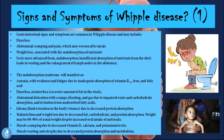Edema, which means fluid retention in the body's tissues, occurs due to decreased protein absorption. Because patients are unable to absorb proteins, they suffer from hypoproteinemia, which leads to different forms of edema. There is also malnutrition and weight loss due to decreased fat, carbohydrate, and protein absorption — the weight may be 80 to 90 percent of usual weight despite increased oral intake. Muscle cramping due to decreased vitamin D, calcium, and potassium levels, and muscle wasting and atrophy due to decreased protein absorption and metabolism.